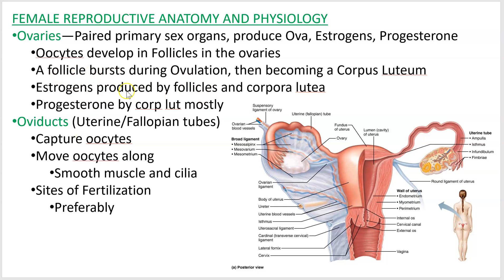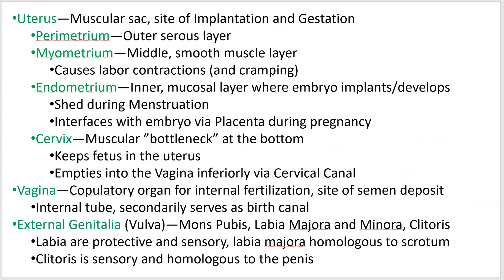They're moving these little guys along, and you'd like the oviduct to be the site of fertilization so that you can warn the uterus to get ready for the embryo that's coming down the tube.